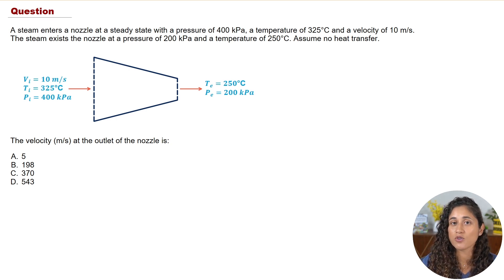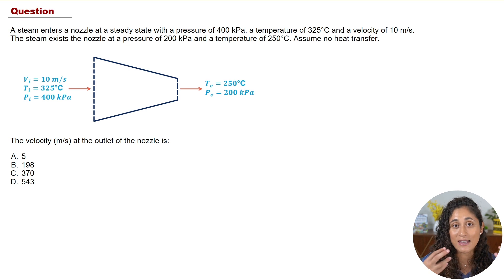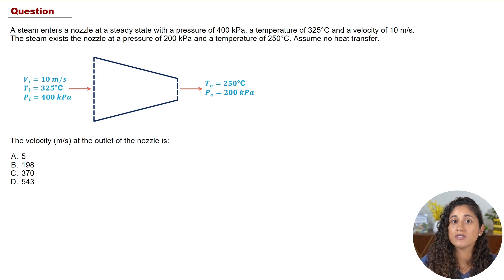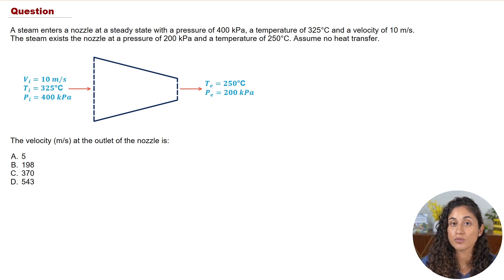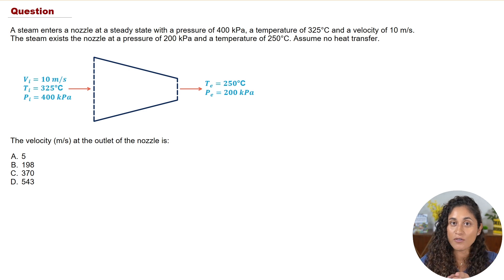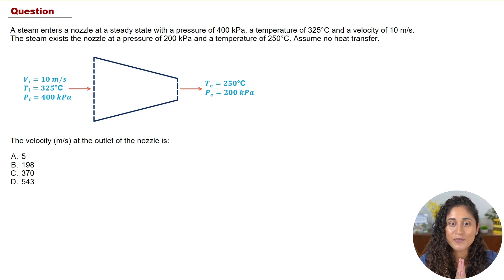Once you grab that equation, you'll notice that we don't have the inlet and exit enthalpy. So we're going to have to find those first, and to determine them we're going to use the superheated tables. We're using superheated tables because we have a steam here — I covered this in the previous problem, so make sure you watch that if you haven't.